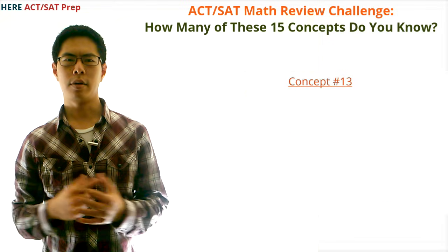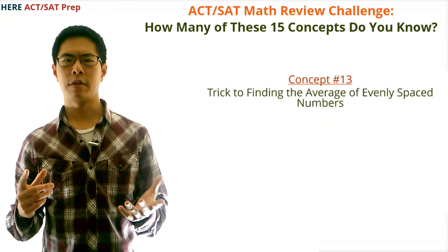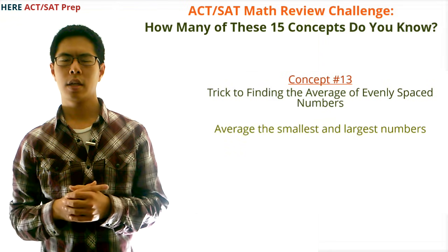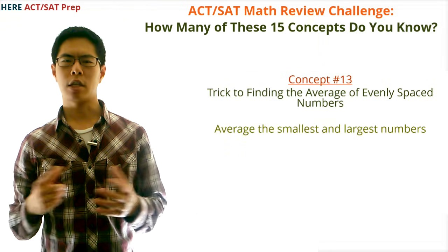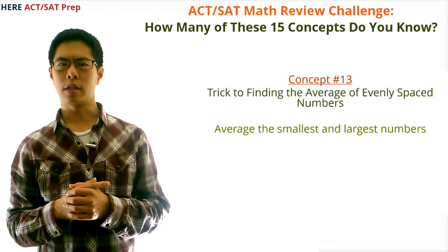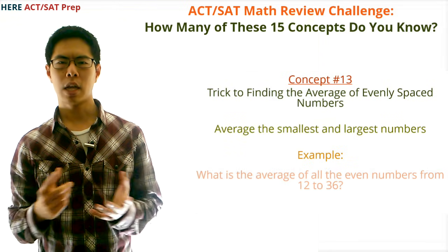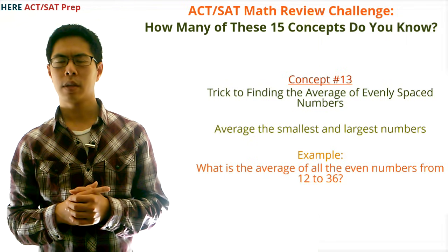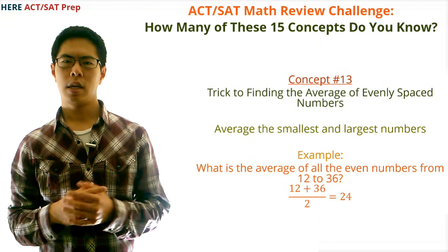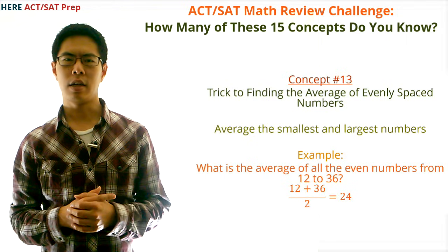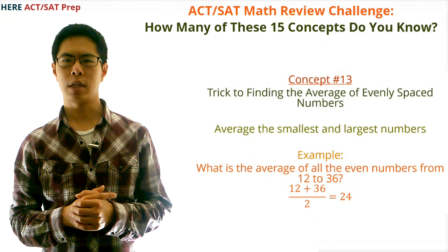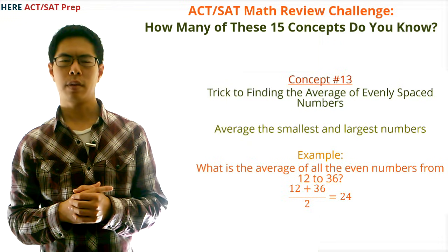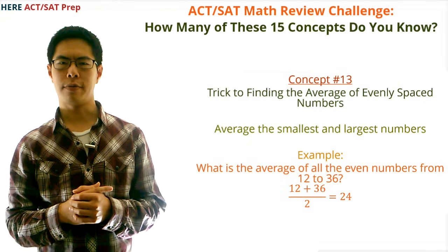Concept number thirteen: the trick to finding the average of evenly spaced numbers. To do this, just average the smallest and largest numbers. For example, the average of all even numbers from 12 to 36 is simply (12+36) ÷ 2 = 24.